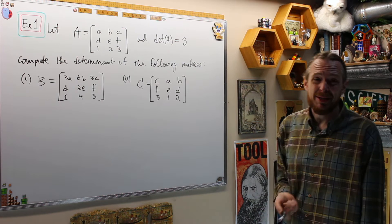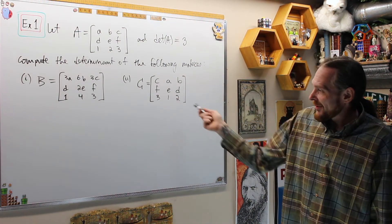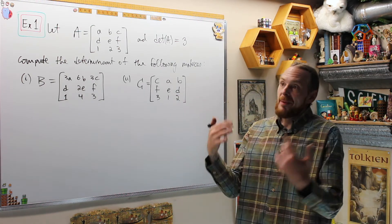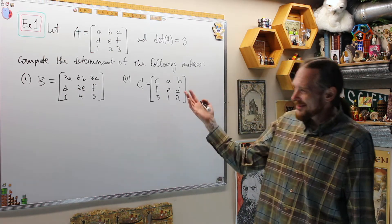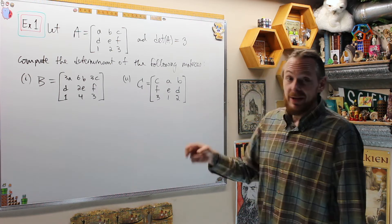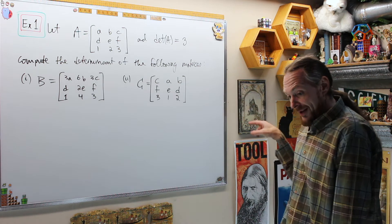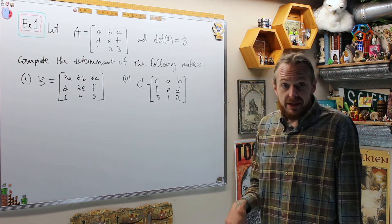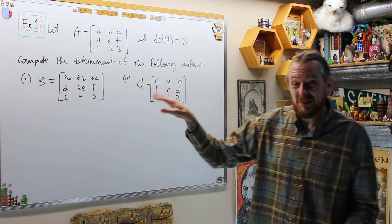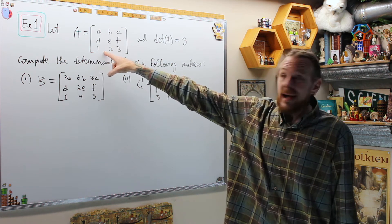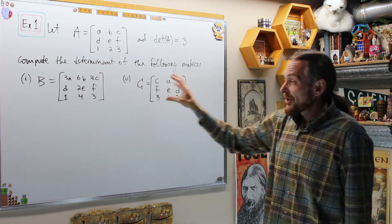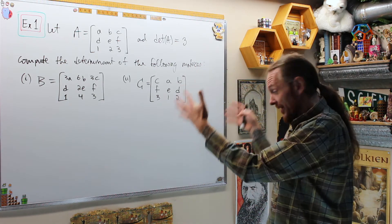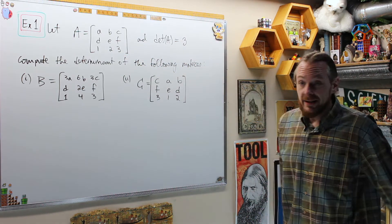For an example, let A be a 3x3 matrix with entries A, B, C, D, E, F, 1, 2, 3. We assume the determinant of A has already been computed and equals 3. We're asked to compute the determinants of several related matrices. The goal is to use the three main determinant properties: interchanging two rows or columns gives a negative; multiplying a single row by a factor multiplies the determinant by that factor; and replacing a row by that row plus a multiple of another row doesn't change the determinant.